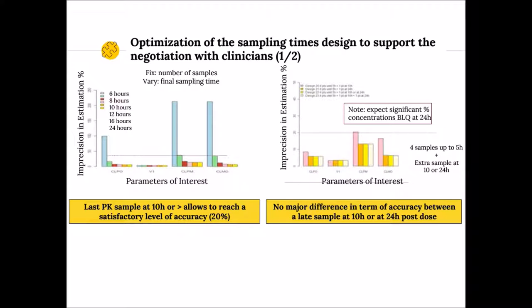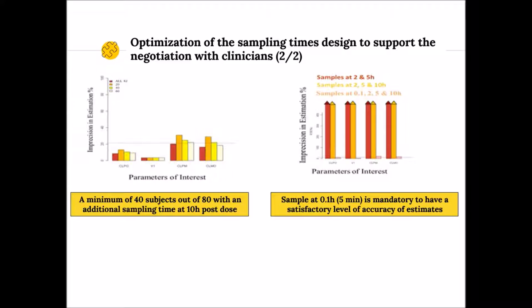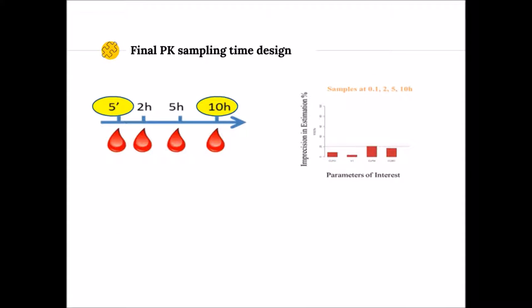We showed that adding the last sample at at least 10 hours after dosing allowed a satisfactory level of accuracy for parameters of interest, like clearance — which was not the case with the last sample at 6 or 8 hours. We showed that 24 hours was not really better than 10 hours for the last sample, with the risk of more data below the limit of quantitation at 24 hours. We showed that a minimum of 40 subjects out of 80, with an additional sampling time at 10 hours post-dose, allowed satisfactory parameter estimation accuracy. Finally, we showed that a sample at five minutes after dose was mandatory.